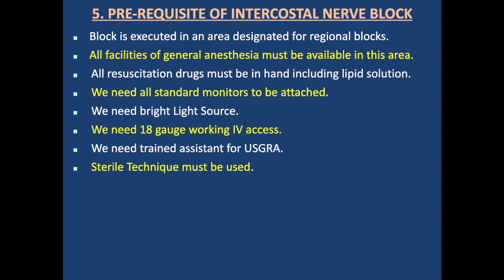The prerequisites for intercostal nerve block: the block is executed in a designated area with all general anesthesia facilities available. All resuscitation drugs must be on hand, including lipid emulsion. Standard monitors must be attached, a bright light source is needed, an 18-gauge working intravenous access is required, trained assistance for ultrasound-guided regional anesthesia must be available, and sterile technique must be used throughout.